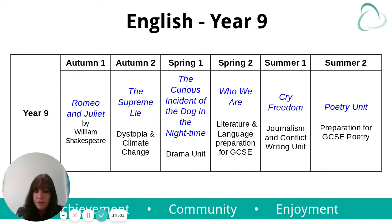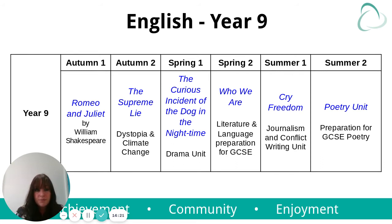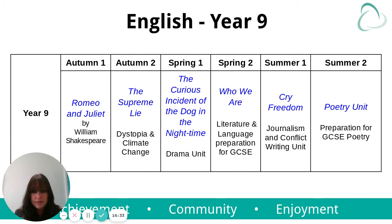Spring 2 also moves us into 'Who We Are' — a combination of literature and language that looks at identity and different presentations of identity across a range of texts. In Summer 1, we study 'Cry Freedom', our journalism and conflict writing unit. Then in Summer 2, we move into poetry as our preparation for GCSE.